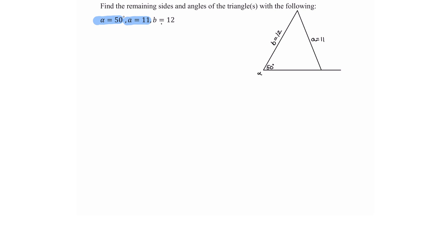Recall that in the side-side-angle case, when the angle is acute and the side opposite is shorter than the adjacent side, we might have either zero, one, or two triangles. Going through the solving process is where we get the information about which case we have. Let's start by using the law of sines since we have the pair of side a and angle alpha.